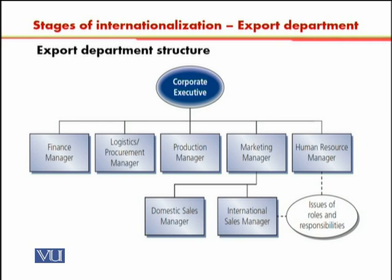In this diagram, you can see the organizational structure. There is a corporate executive head, and then there are departments of an organization, each headed by one manager. So there is a finance department with a finance manager, a logistics department with a logistics manager, a production department with the production manager, a marketing department, and a human resource department, both with their individual managers.